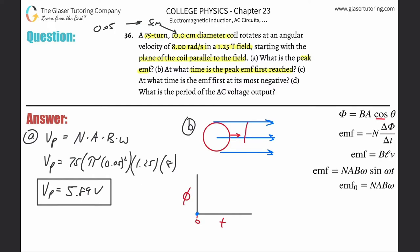When the normal is parallel to the magnetic field, that angle is zero, and therefore the flux reaches its maximum. So going from the initial picture to this rotated position is a quarter of a revolution. The question is: how long does it take to go through a quarter revolution?